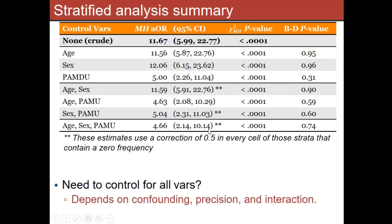The last row is an analysis where we simultaneously stratify on age, sex, and previous antimicrobial use — a lot of cells. And what you see is: once we start controlling for certain variables, the answer changes substantially. We went from 11.7 to 4.66 once you control for everything. You should never believe an odds ratio of 11.7 — if you see it, scrutinize it. That's a really strong association and doesn't usually happen.